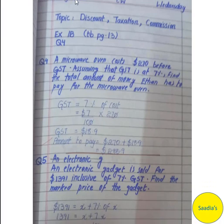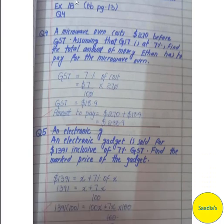Question number 4: a microwave oven costs $270 before GST. Assuming GST is at 7%, find the total amount Ethan has to pay. GST stands for goods and services tax, which is added to the cost. So GST equals 7% of $270, which is 7 over 100 multiplied by 270, giving GST of $18.90. Total amount to pay is $270 plus $18.90, which equals $288.90.